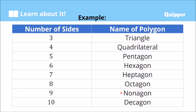We have here in the table the number of sides of that plane figure and the corresponding name of the polygon. A closed plane figure means all the sides are connected to each other — walang opening ang figure. So, three sides, we call that triangle.